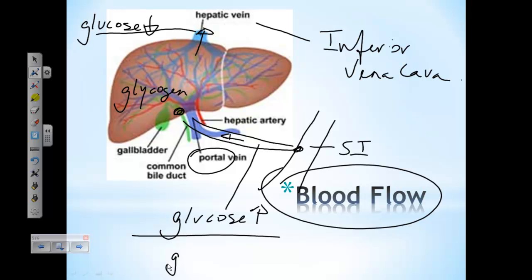And the reverse would be true then. Between meals, our blood glucose might drop and it would be lower in the portal vein. And then the liver would break down glycogen, release glucose into the bloodstream, and this would bring our blood glucose back up on the hepatic vein.